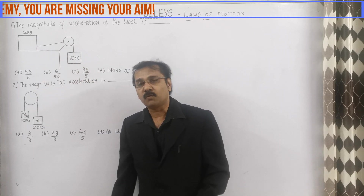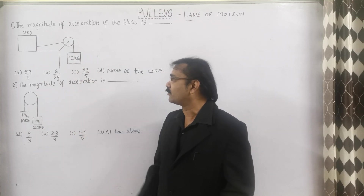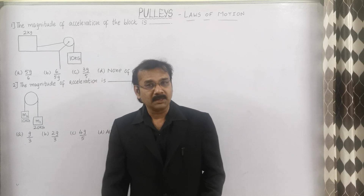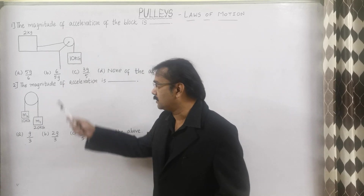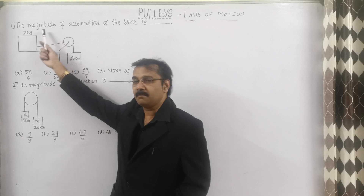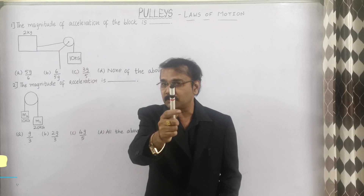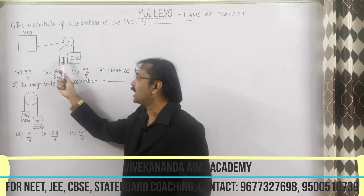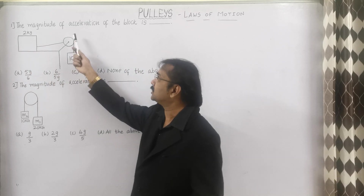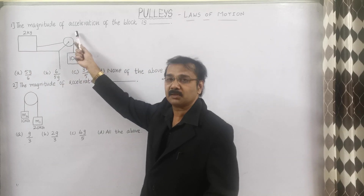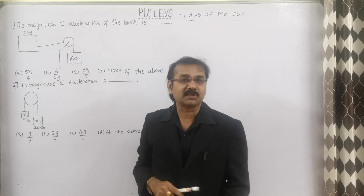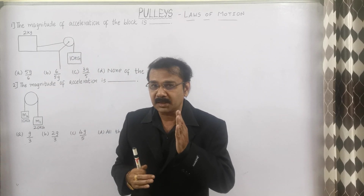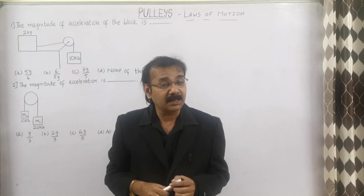The options are 5G by 6, G by 3, 3G by 5, and option D. See the particular diagram and remember it — please store it in your subconscious mind. One is fixed, the other one is hanging. The question asks for the magnitude of acceleration. How to do this sum without using any formula and any concept?